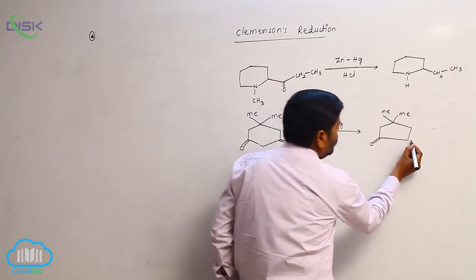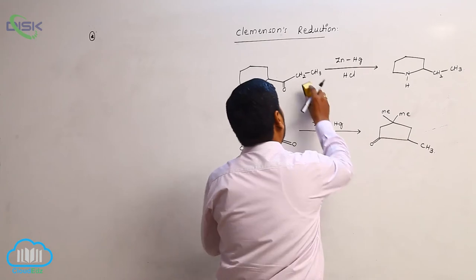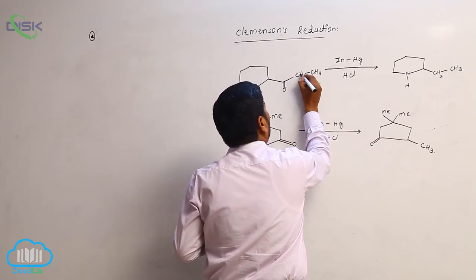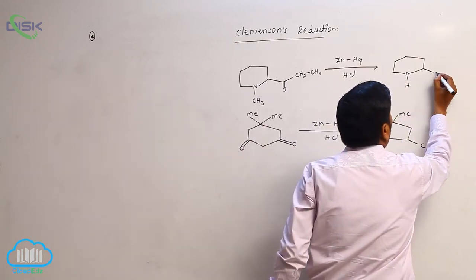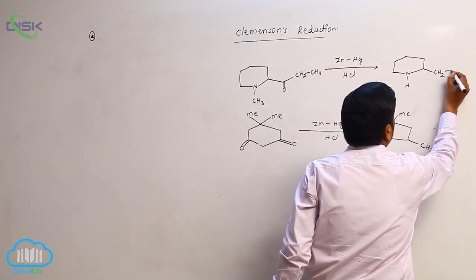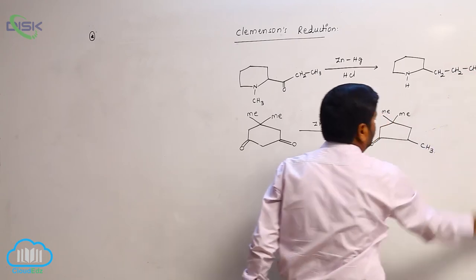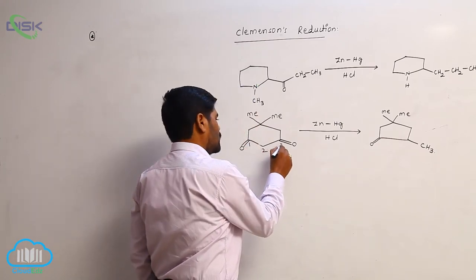Here it converts into CH3 group. I think this is correct. CH2, CH2, here is also CH2, CH2, then CH3, then CH3. So 1, 2, 3.